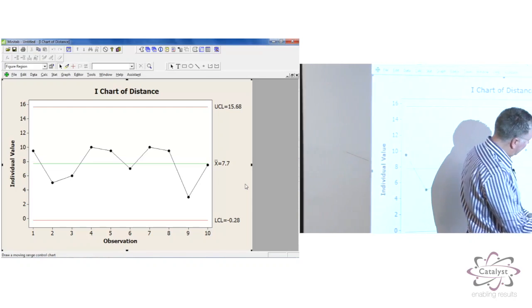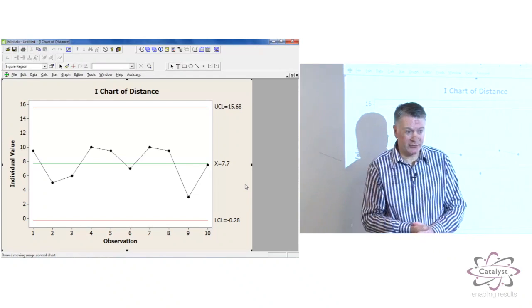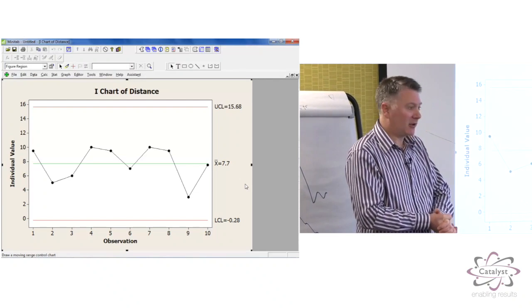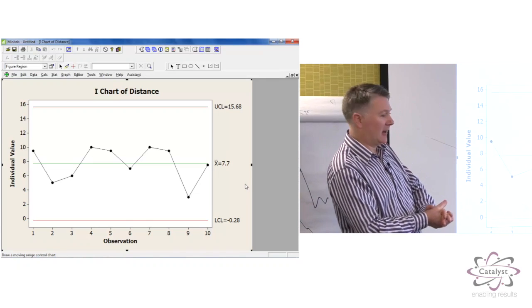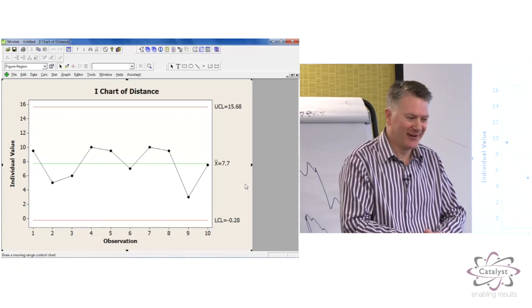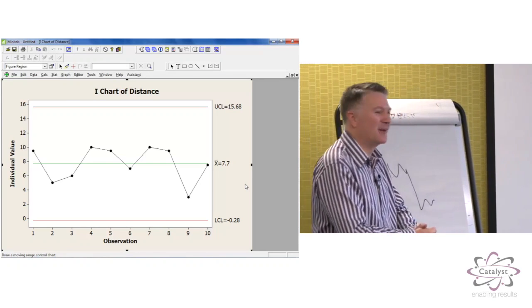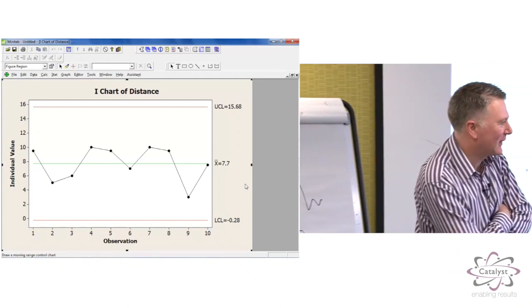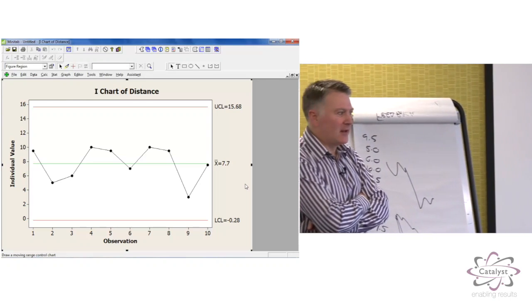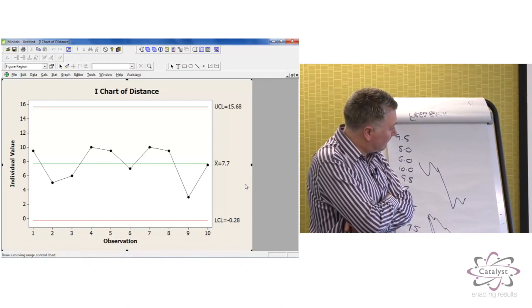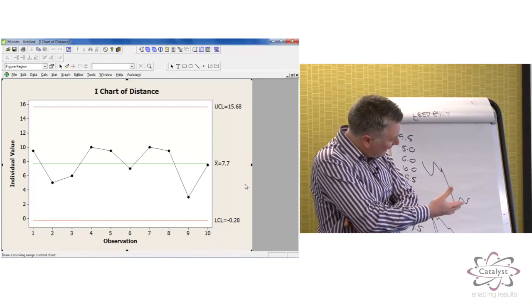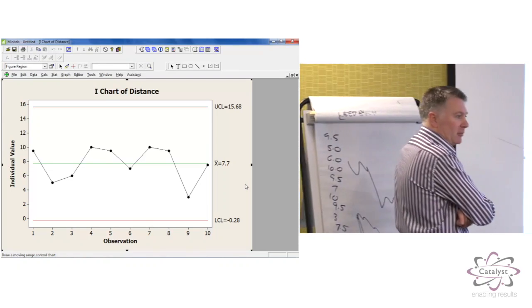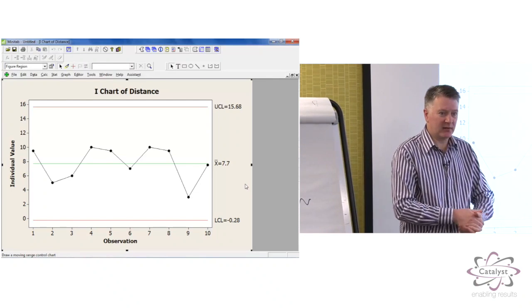We can say at this process that, on average, it produces a result of 7.7 centimetres from the target, but at individual shots, we would expect to be anywhere between 15 and zero. Well, we'll deal with that little problem of negative control limits for some situations a bit later on. Yeah, so what we'd expect is that, because it's stable, it would be reasonable to expect that if Phil kept shooting, that all his shots would be between 0 and 15.68.